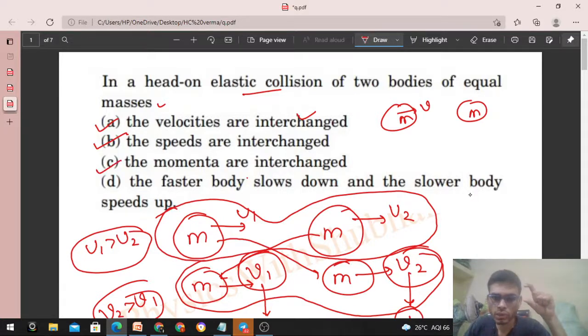The faster body slows down and slower body speeds up. So look, if velocity changed, means the body initially moving with higher velocity will now move slowly. So you can say that if velocity is interchanged, the body that was moving fast will now move slow, and the body that was moving slow will move fast. So option D is also correct.